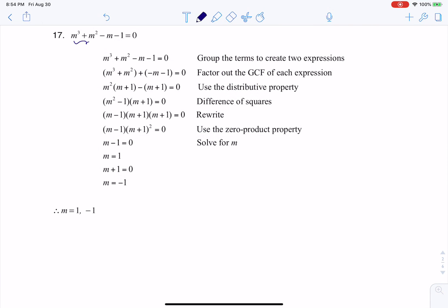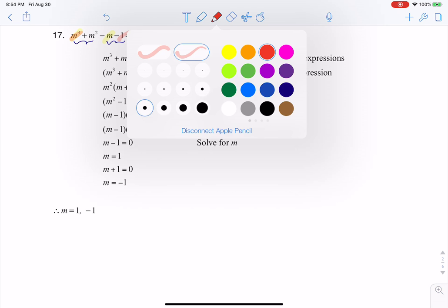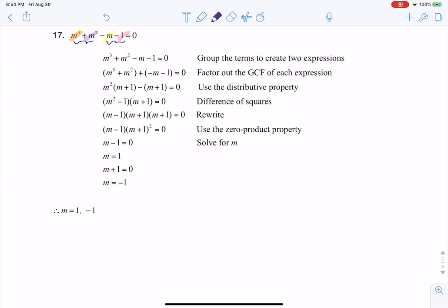You don't have to group the first two and last two. You could try grouping the first and third one, first and fourth, or second and third. You have a bunch of options here, but basically you want to group two sets of two together.